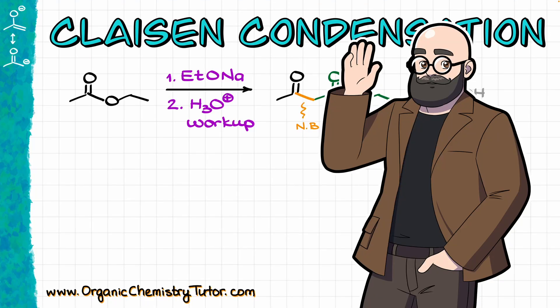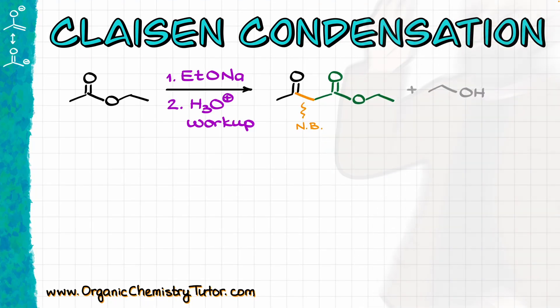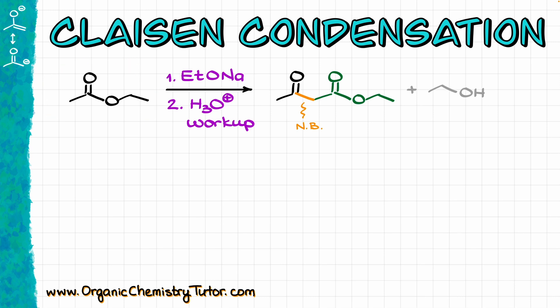Hey everyone, Victor is here, your organic chemistry tutor. In this video I want to talk about the Claisen condensation, which is a reaction where two equivalents of the same ester, or maybe two different esters or an ester and another carbonyl, are going to produce a 1,3-dicarbonyl compound as the final product.